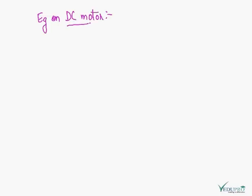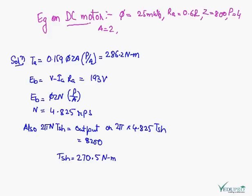We will see an example of DC motor. Determine developed torque and shaft torque of 220 volt 4 pole series motor with 800 conductors wave connected supplying a load of 8.2 kilowatts, taking 45 ampere from the mains. The flux per pole is 25 milliweber and its armature circuit resistance is 0.6 ohm. The things which are given are Phi, RA, Z, P, and A is equal to 2.